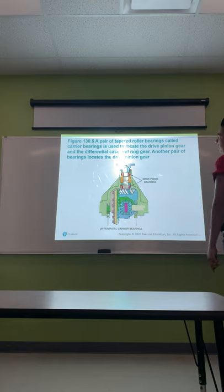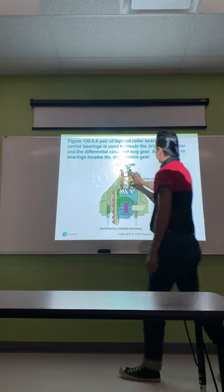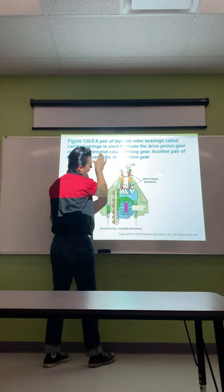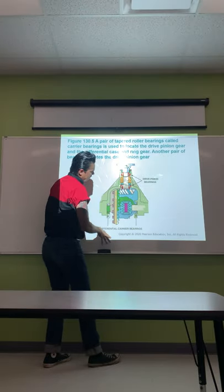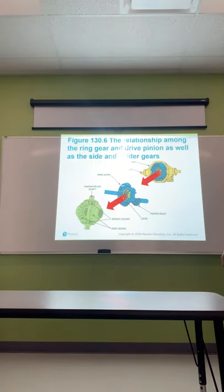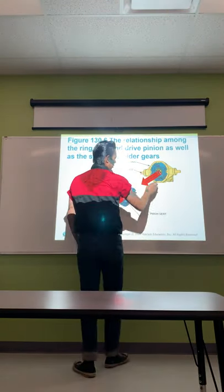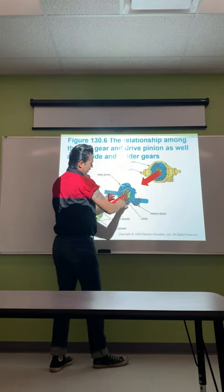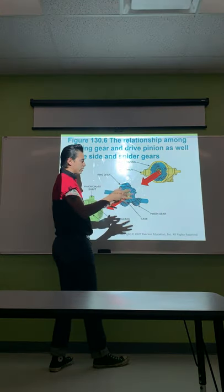A pair of tapered roller bearings called carrier bearings is used to locate the drive pinion gear and the differential case and ring gear. Another pair of bearings locates the drive pinion gear. When you pull the bolt out, you have to remove the flange — the pinion gear comes out from the center, so you have to remove the entire carrier to access the pinion gear. The assembly has bearings on the side with spacers and shims for adjustments.